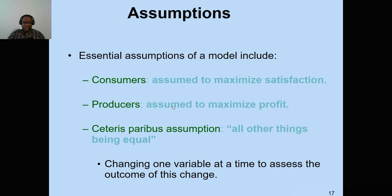Producers, we assume, are there to maximize profit — they are not there for purely philanthropic purposes, though philanthropy may be part of their intangible profit. We also have the concept of ceteris paribus, an assumption meaning 'all other things being equal.' We make this assumption because we want to hold variables constant when we make a change. For example, if you want to investigate whether people buy more coffee when you increase the price, you hold all other variables constant — because if your income just doubled, you might buy more coffee even at a higher price.